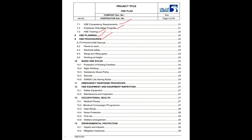HSC Procedures. In this section some HSC procedures are included, like company HSC manual, permit to work system procedure, electrical safety procedures, slinging and lifting procedures, and working at height procedures will be included in this HSC plan.